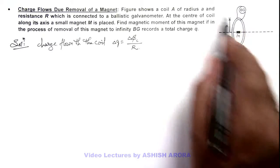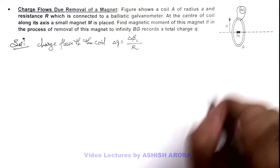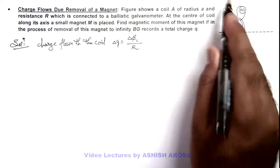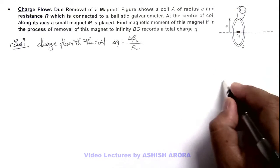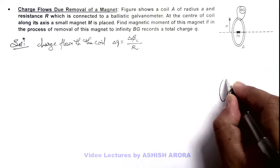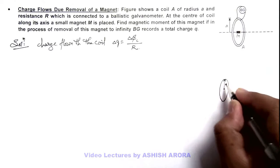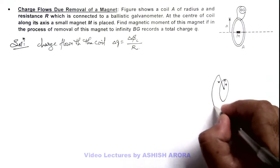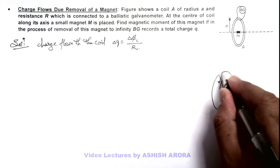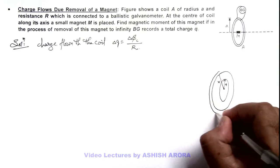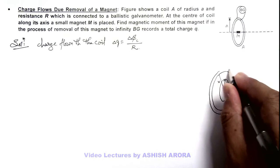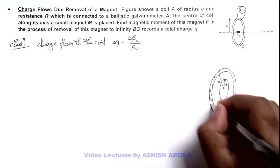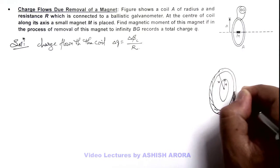So for this coil of radius a, if we consider an elemental strip of radius x and width dx in the surrounding of this coil, then we can see this strip has an area of 2πx dx.